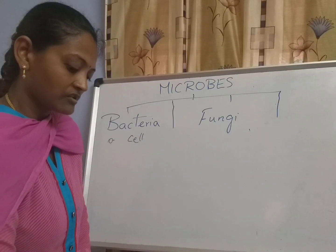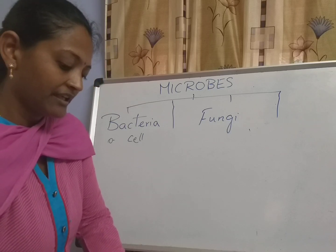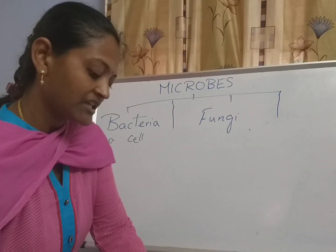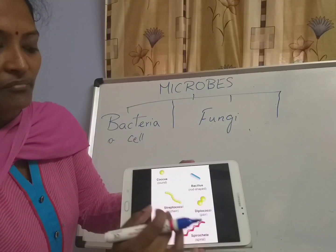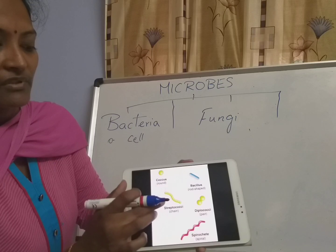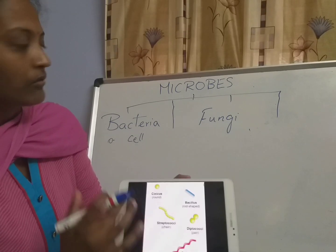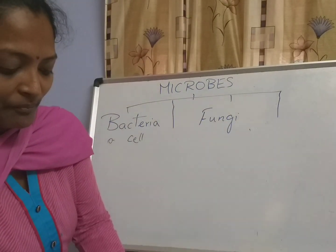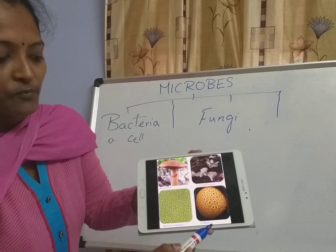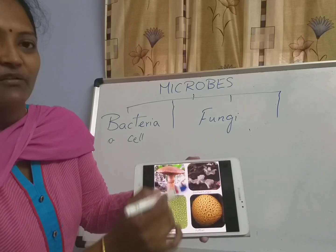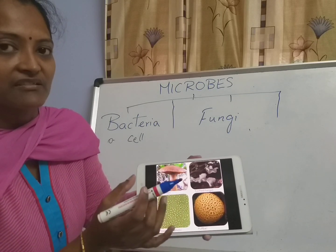Now I will show you pictures of those microbes — how they look when seen inside the microscope. See, these are the bacterial cells — in round shape, chain shape, and rod shape. These are all bacteria in different shapes. Now coming to fungi — mushrooms and yeast. This is a puffball and toothed fungus. All these are fungi; they look like small plants.